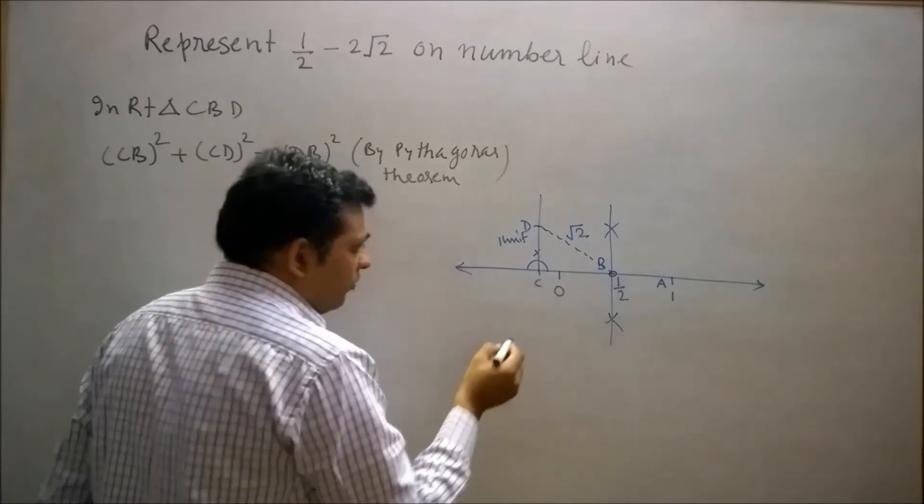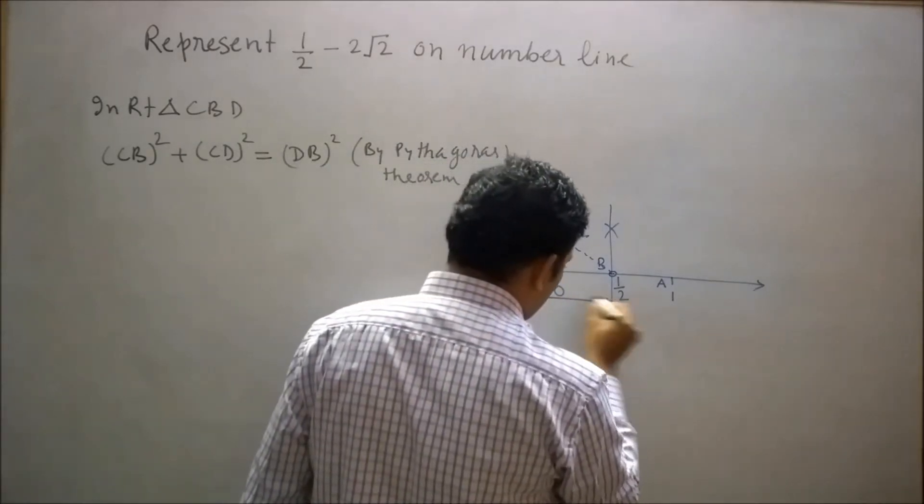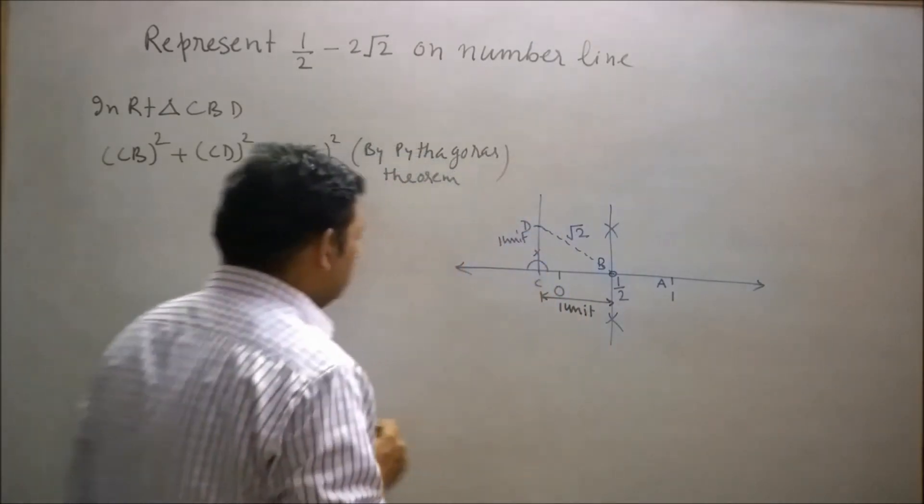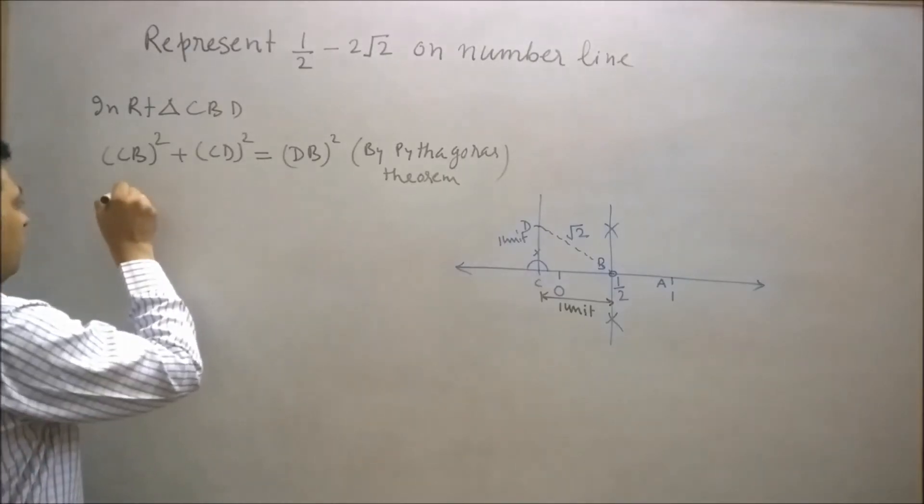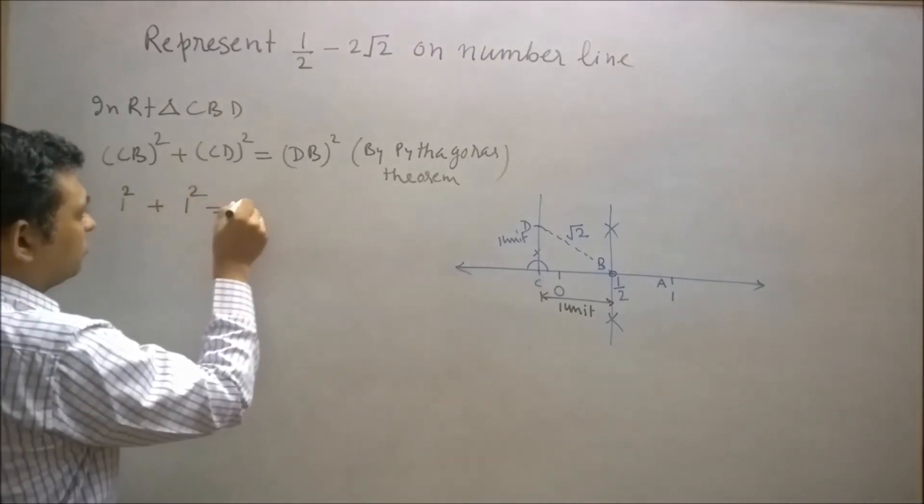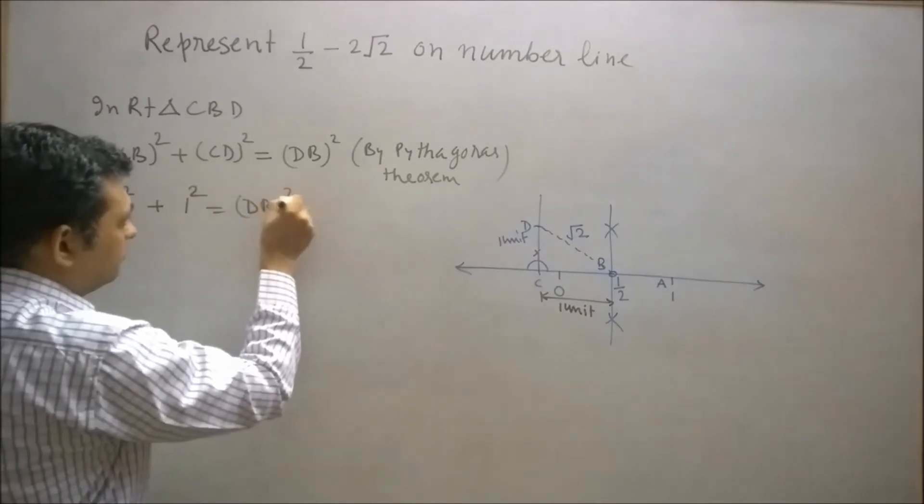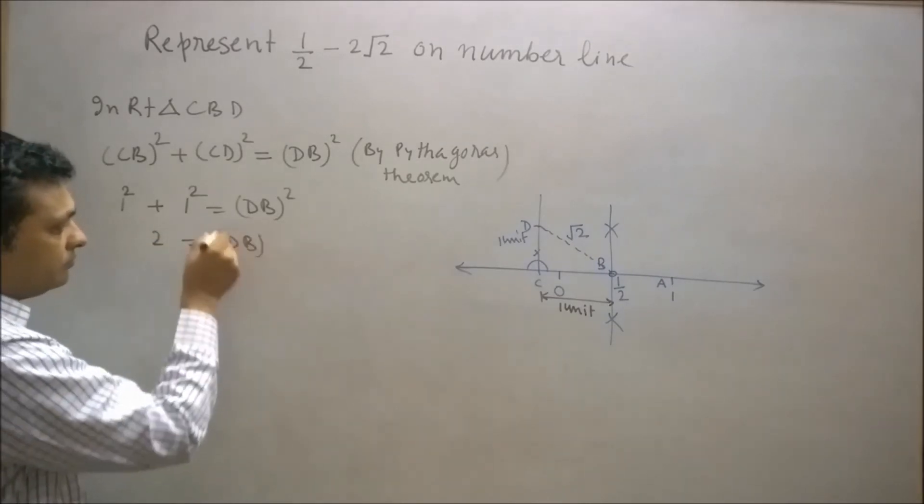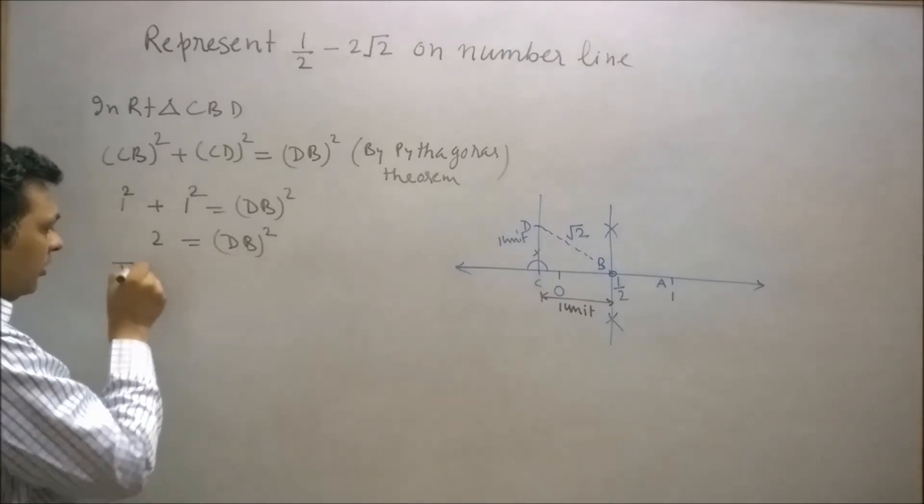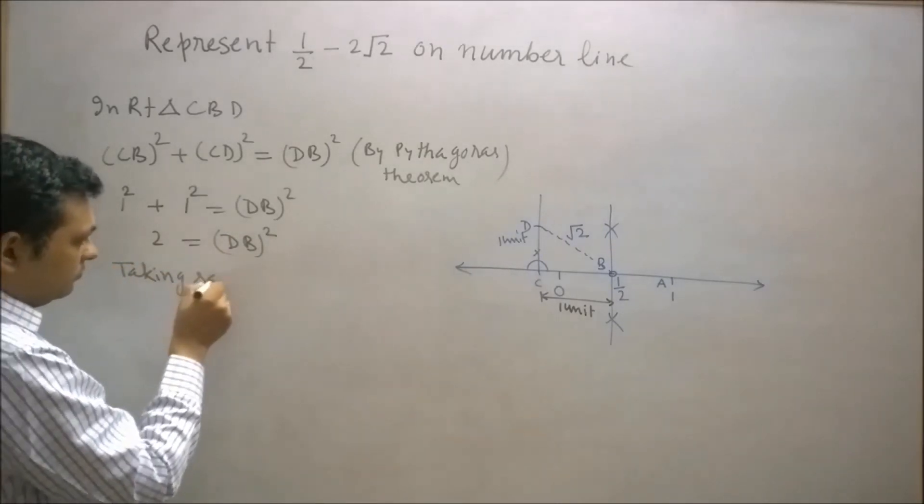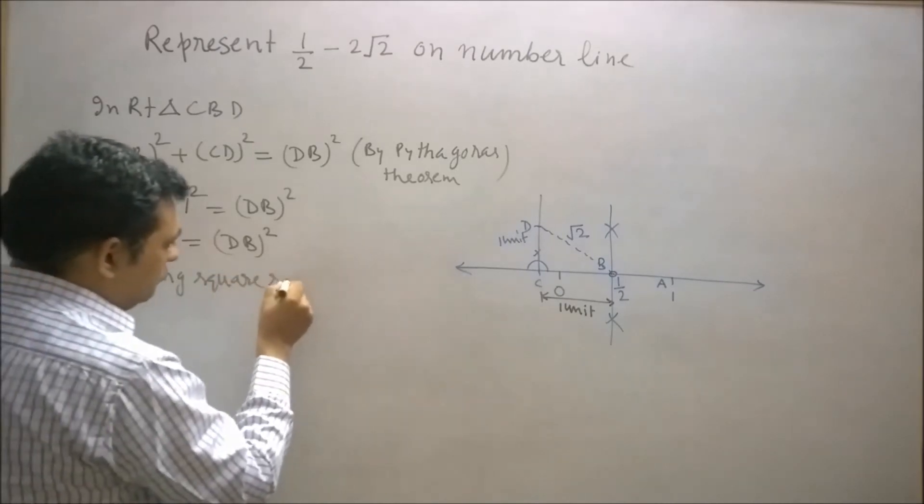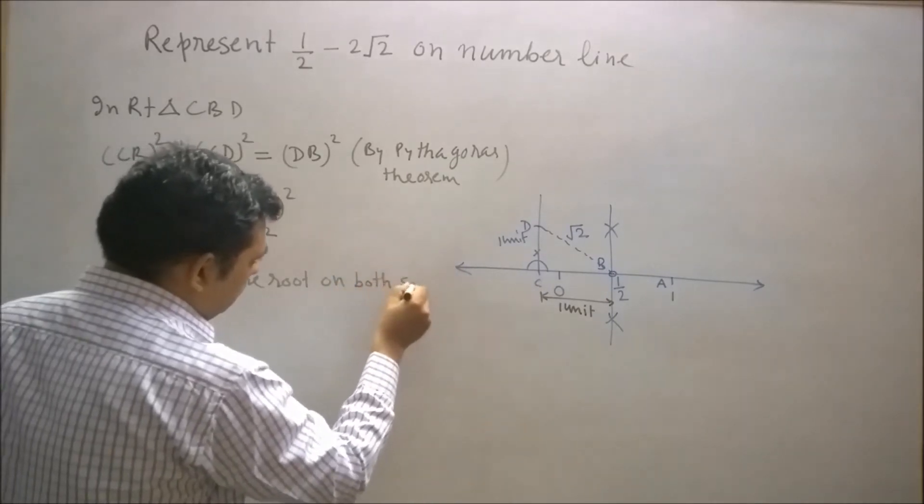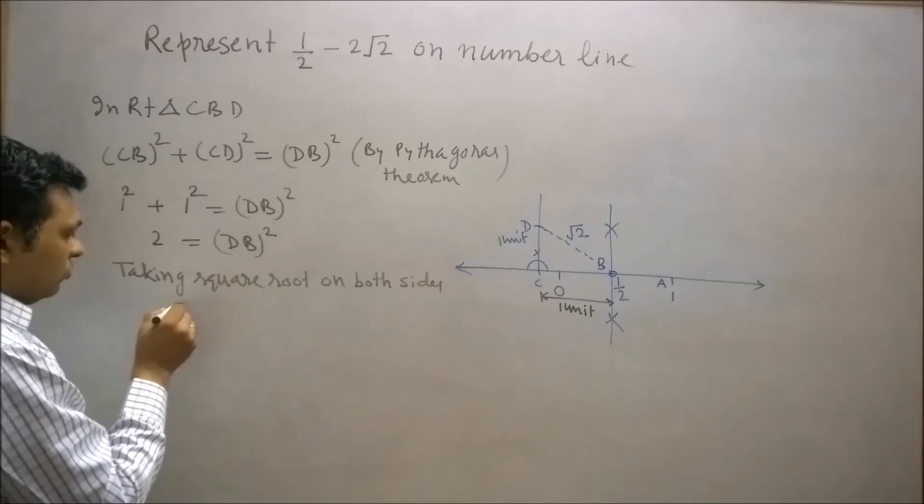Here CB is 1 unit. CD is also 1 unit. So square of 1 plus square of 1 is equal to square of DB. Left hand side becomes 2. So 2 will be equal to square of DB. Now taking square root on both sides. So DB will equal to root 2.